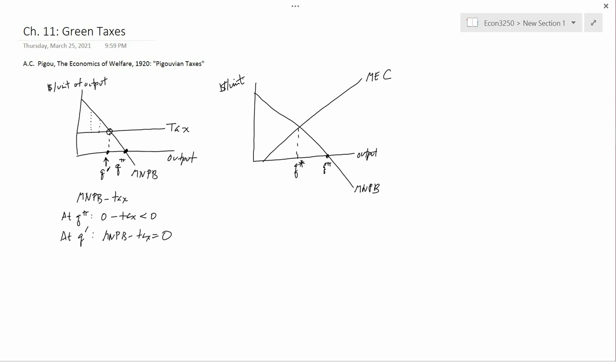Now, before Pigou, what economists would say is the free market wants to go to Q pi, socially optimal is Q star. So what you need to do is pass a law. The government needs to pass a law saying that it's illegal to produce more than Q star units of output. And then, if the law is always followed, then you solve the problem.